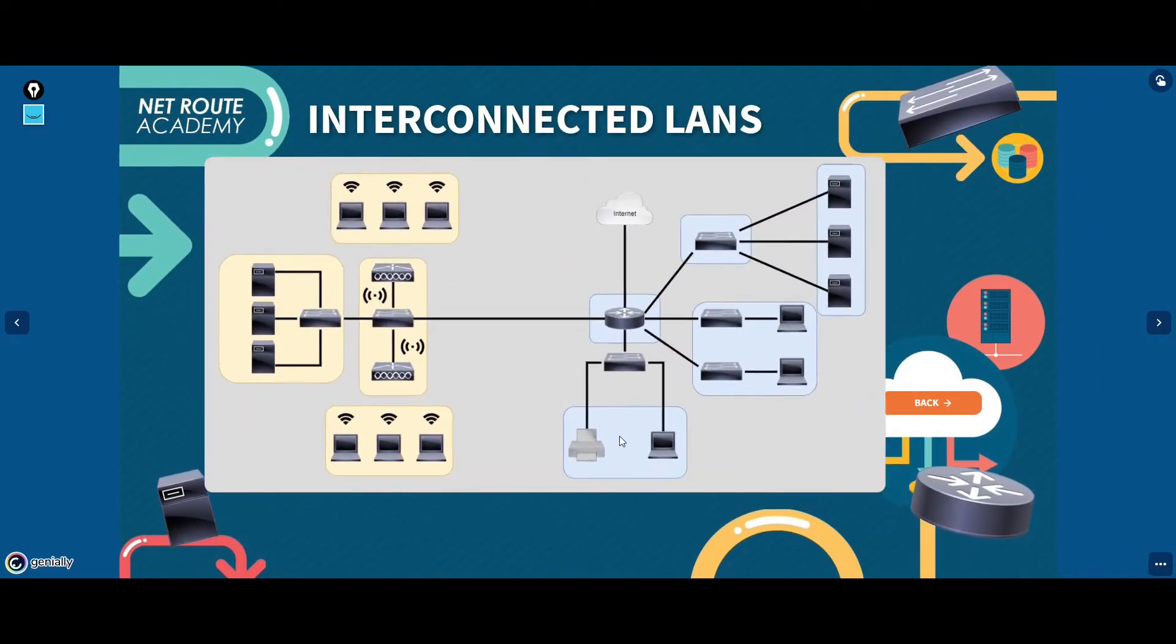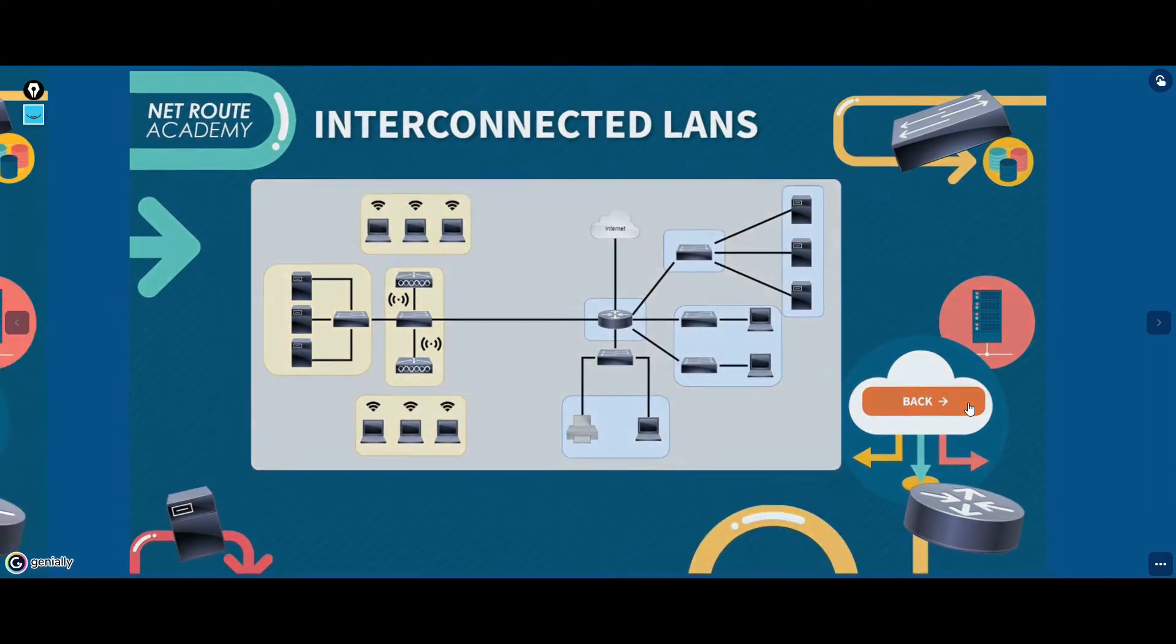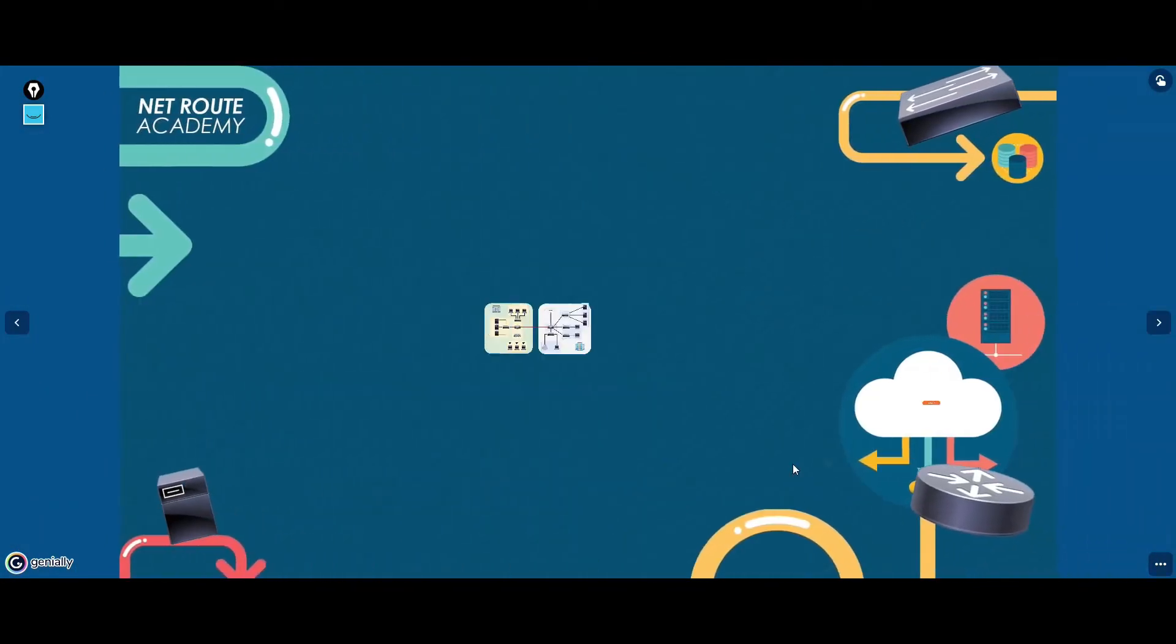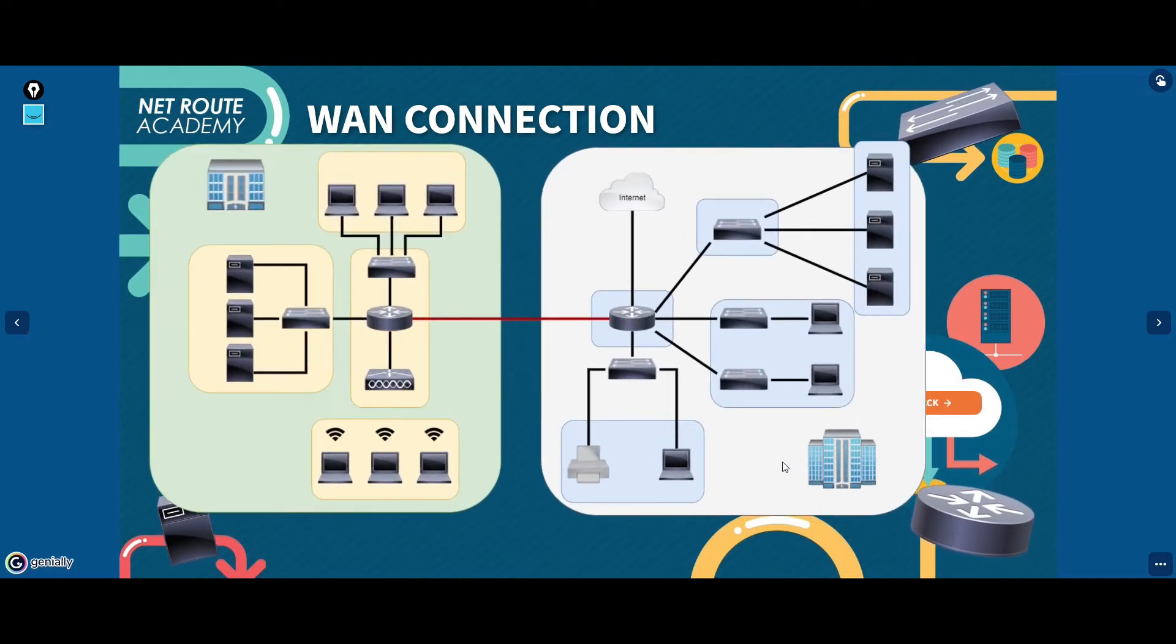A group of local area networks that spread over a wide geographical area is called wide area network. A group of connected LANs in the same geographical area, for example,